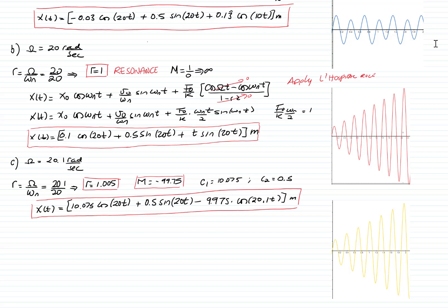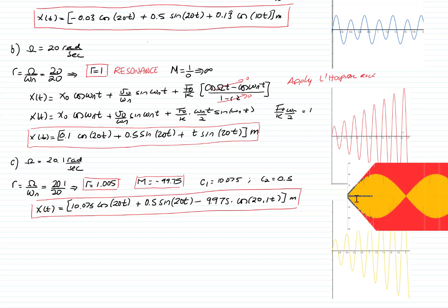However, zooming out reveals a key difference. The red curve (resonance) grows without bounds and never stops. The yellow curve — called beats — grows, then diminishes, then grows again, then diminishes again. It does not grow without bounds. The frequency at which the response goes from maximum to zero and back is called the beat frequency.